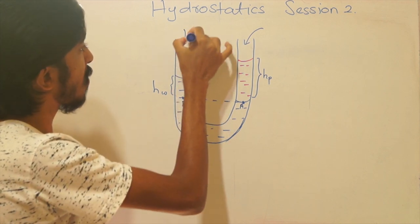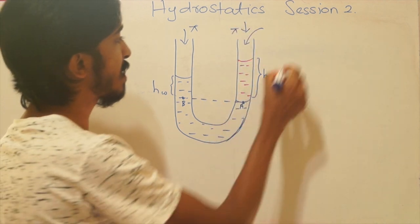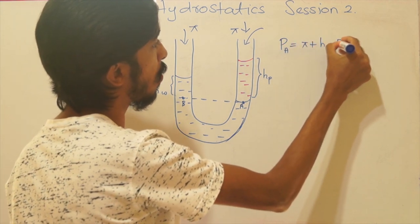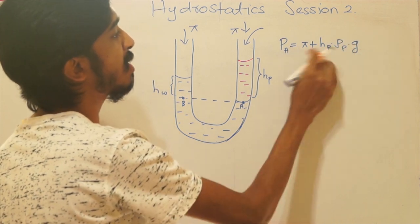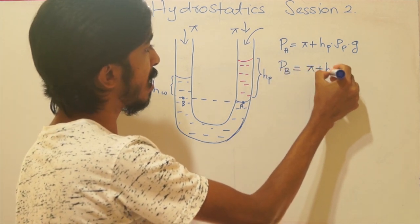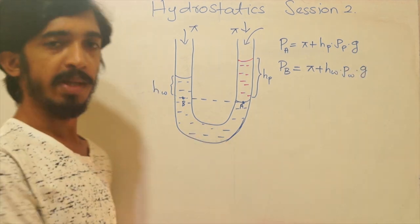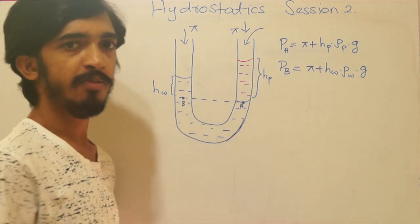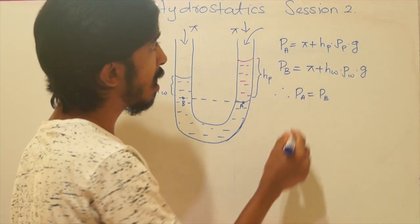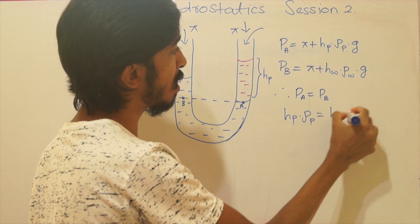Both A and B are open to atmosphere, so there is atmospheric pressure φ at each. Pressure at A: Pa = φ + Hp·ρp·g. Pressure at B: Pb = φ + Hw·ρw·g. Since this liquid is at rest, pressure at the same level would be equal, so Pa = Pb. Equating gives: Hp·ρp = Hw·ρw.